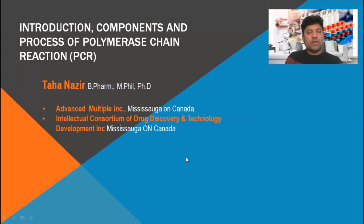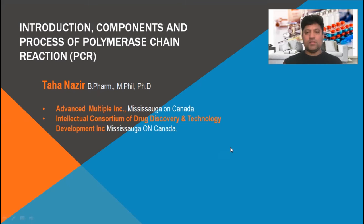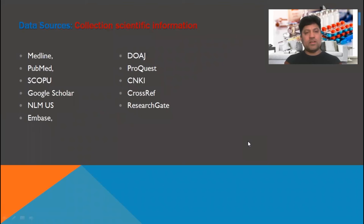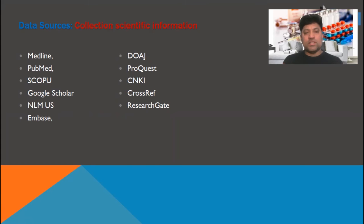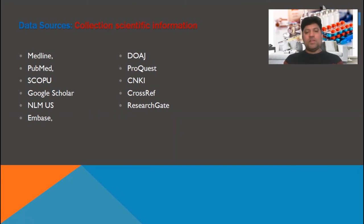Today I'm going to share my information, knowledge and experience under the title: Introduction, Component and Process of Polymerase Chain Reaction. For this purpose, I collected scientific information and research data from PubMed, Medline, Google Scholar, National Library of Medicine, MBS, Directory of Open Access Journals, ProQuest, CNKI — that is China-based database company, stands for China National Knowledge Infrastructure — and some information collected from ResearchGate and CrossRef.